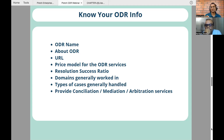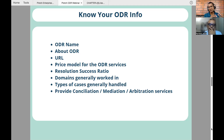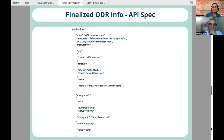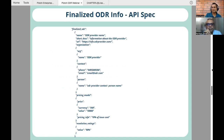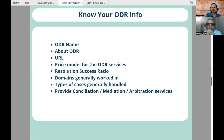There are three primary mechanisms in ODR: conciliation, mediation, and arbitration, which Rajneesh will talk more about. ODRs publish which mechanisms they provide. This is how the ODR information goes through the API — all the details I talked about are also included in the API.